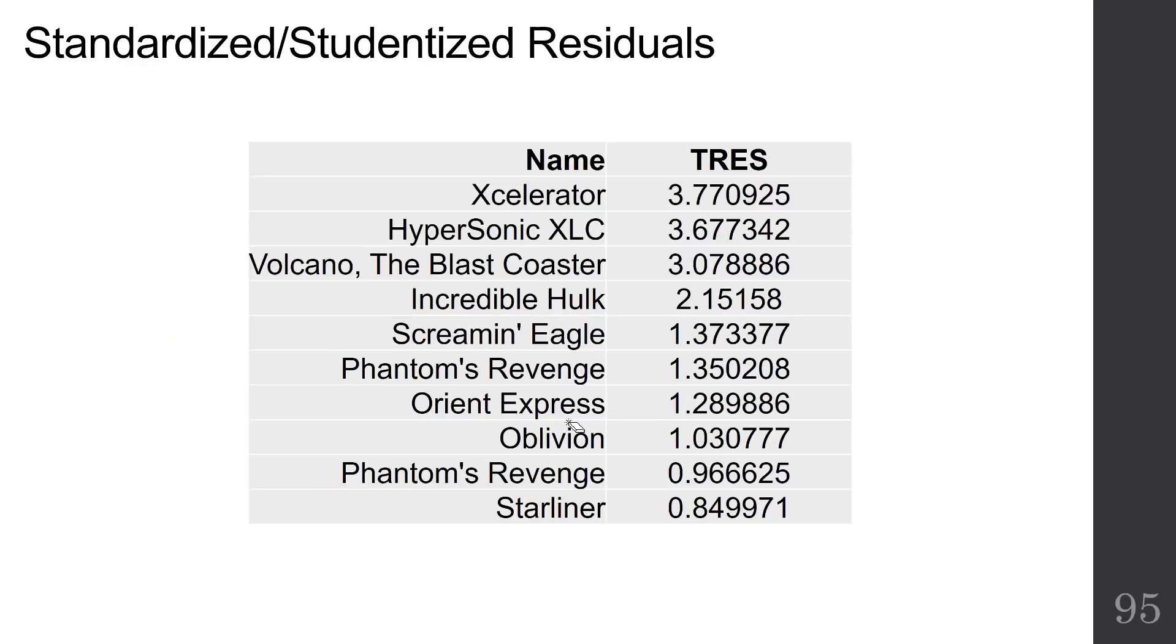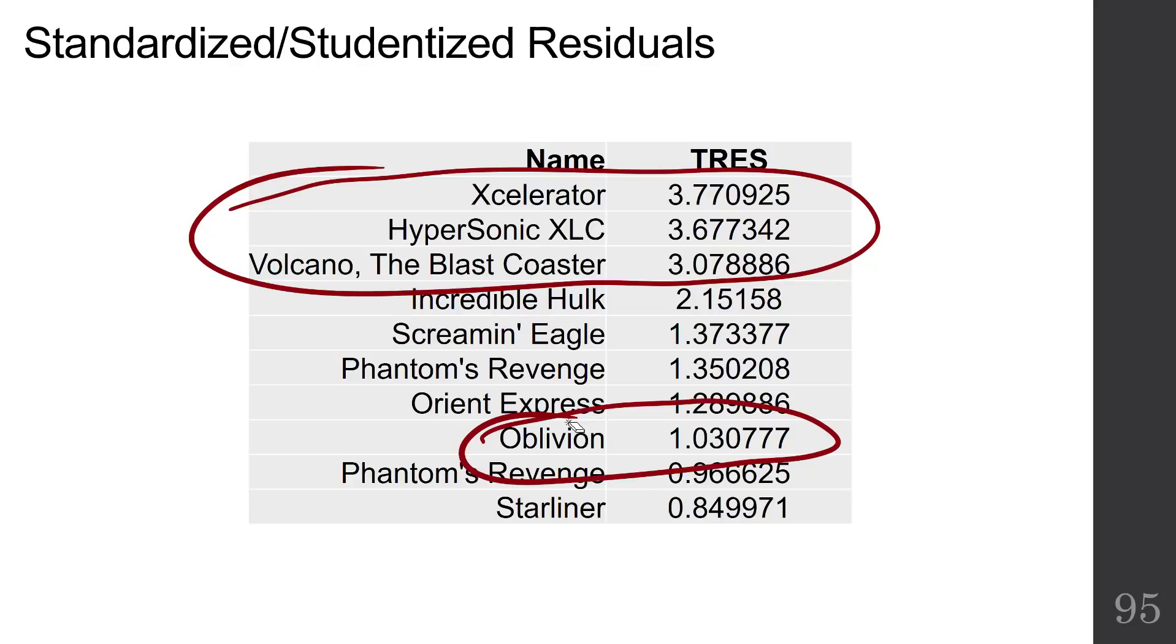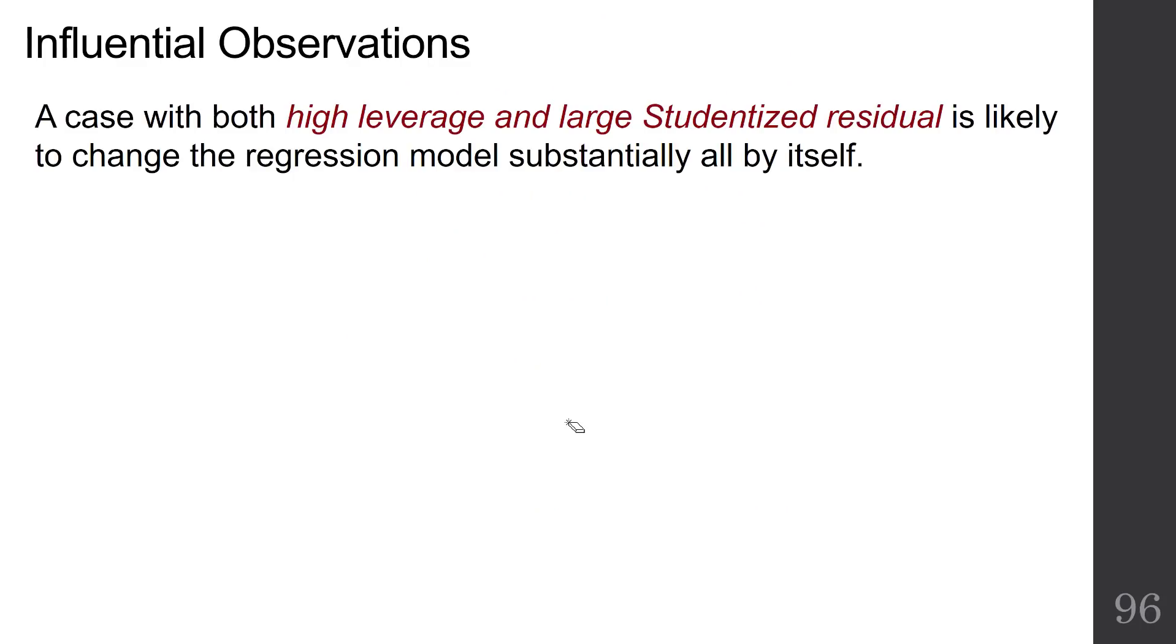We've got the standardized residuals out of R and we see that there are 3 that are very extreme - they're above a 3: Accelerator, Hypersonic, and Volcano. And we've got Oblivion down there. I just thought we'd talk about that again since we've already pointed it out with high leverage. We'll be revisiting Oblivion again here too. It's not too bad on the residuals.